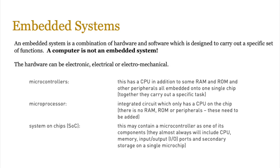Let's start with a formal definition. An embedded system is a combination of hardware and software which is designed to carry out a specific set of functions. A computer, in the traditional sense, is not an embedded system — so never say a laptop is an embedded system. A laptop might have multiple embedded systems in it, but a laptop itself isn't an embedded system; it's a general purpose system.